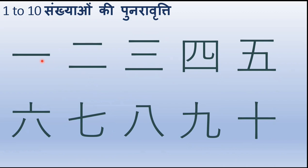Toh ab tak hamne, isse pahle ke paaton mein, ek se paanch tak aur das — ye chhe chinha hamne kiya tha: ek, do, teen, char, paanch aur das. Aur aaj ke paath mein hamne chhe, saat, aath, nau kiya. Toh is tarah se ek se lekar das tak ki kanji ka adhyayan poora hua.